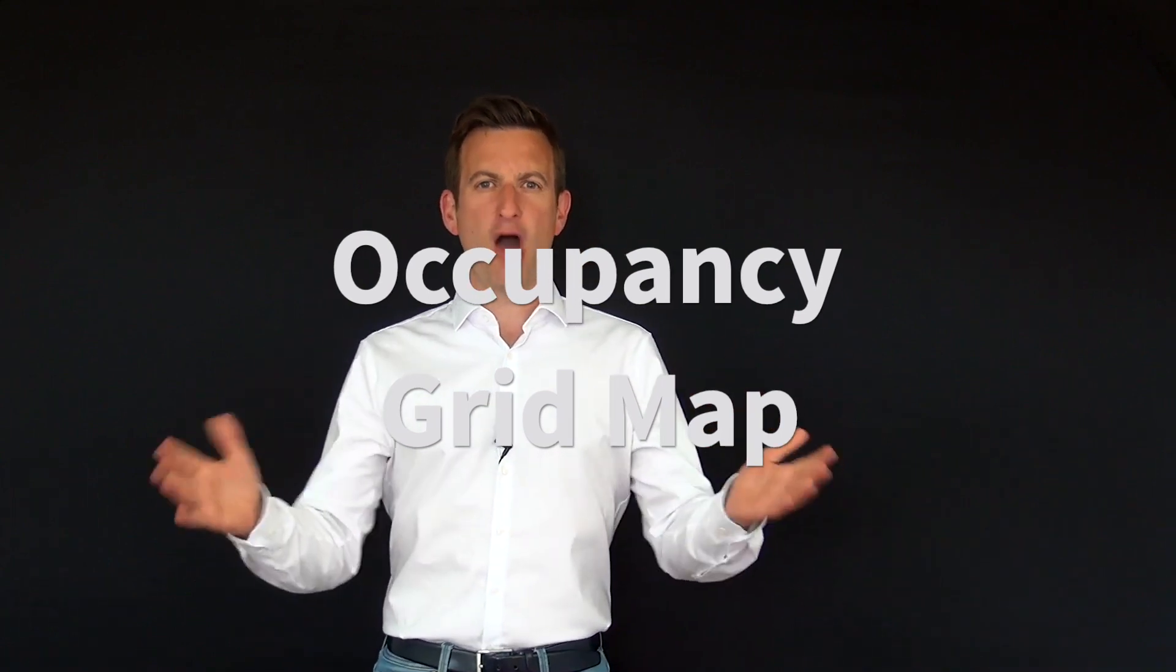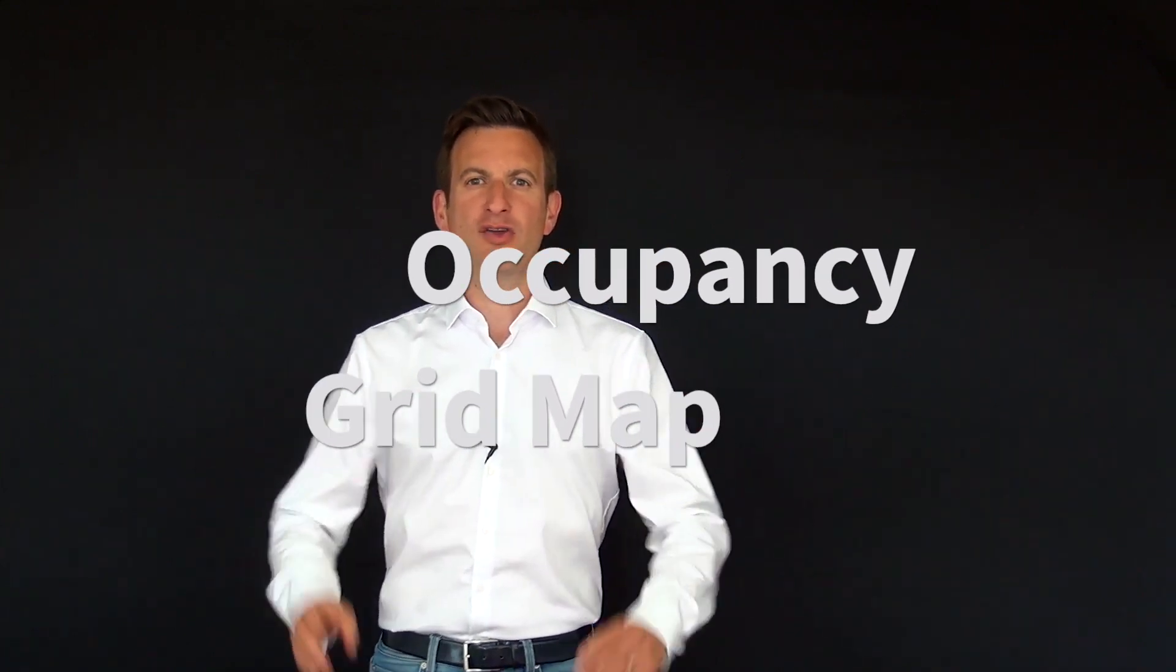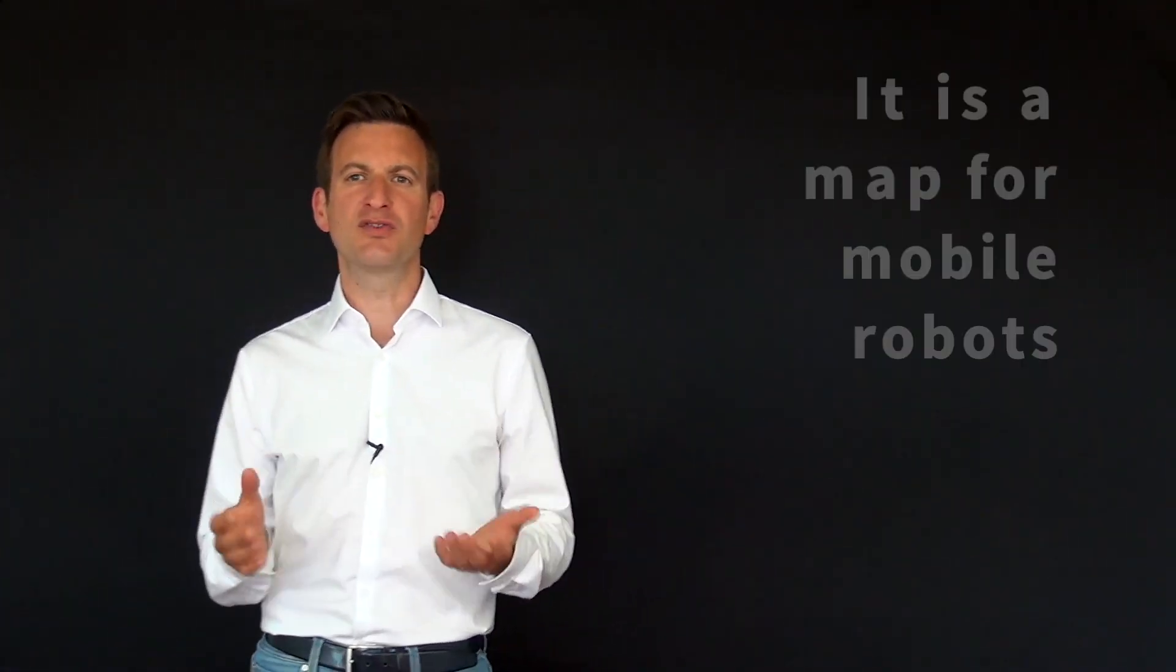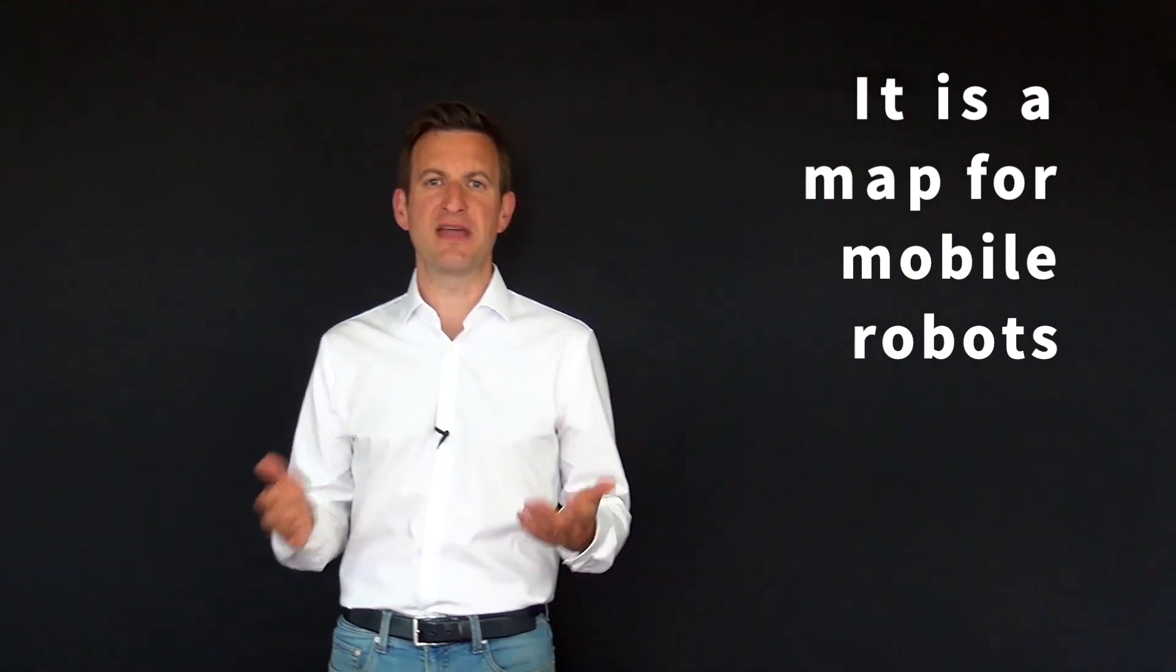What is an occupancy grid map? An occupancy grid map is a 2D representation of the environment, and it's actually very similar to an old-school map that you use to navigate through a city.